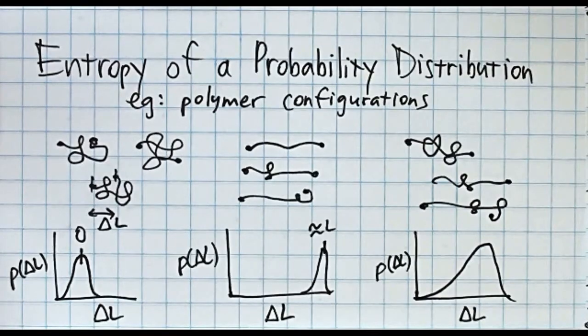But exactly how much more likely? What about an intermediate set of configurations like this? What is the free energy difference we need to overcome to stretch the polymer?